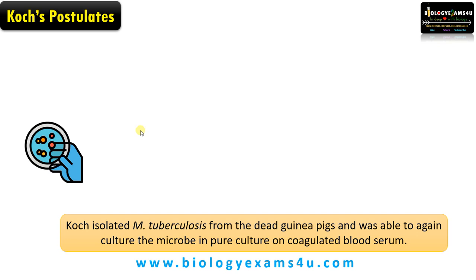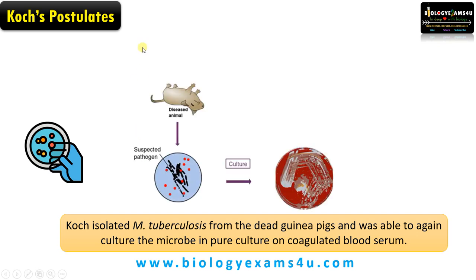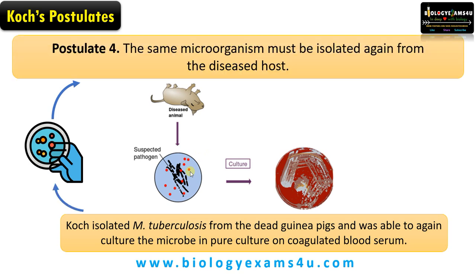Koch isolated Mycobacterium tuberculosis from the dead guinea pigs and was able to again culture the microbe in pure culture on coagulated blood serum. He isolated cells and tissues from the diseased animal that had been injected with the causative organism, confirmed the presence of the suspected pathogen, and made a pure culture. From this he formulated the fourth postulate: the same microorganism must be isolated again from the deceased host.